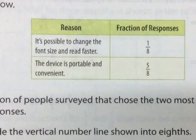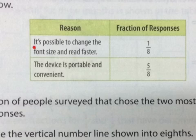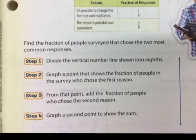Reasons. Let's zoom in so that we can see this a little better. It's possible to change the font size and read faster. Fraction of responses. So one-eighth of the group gave this response. The device is portable and convenient. Five-eighths, so more than half, gave this response. Okay, so what does this information really mean? How can we break this up?